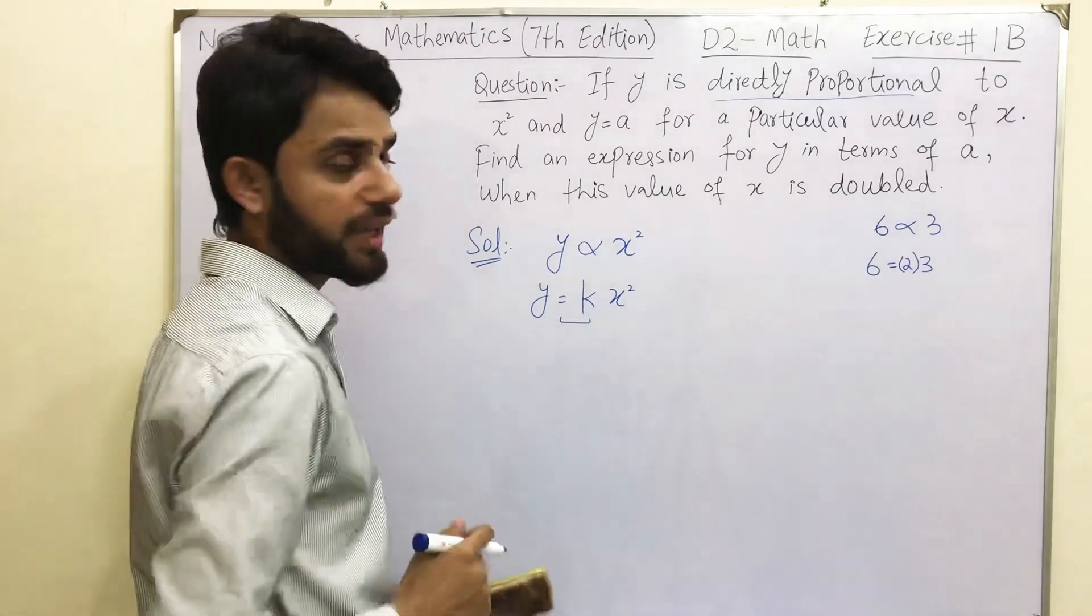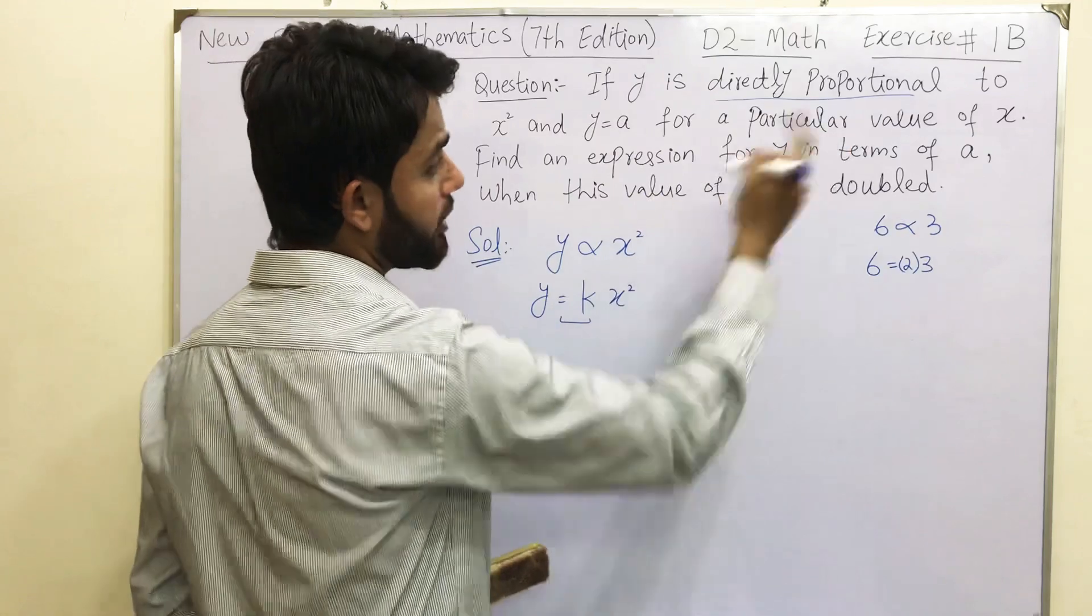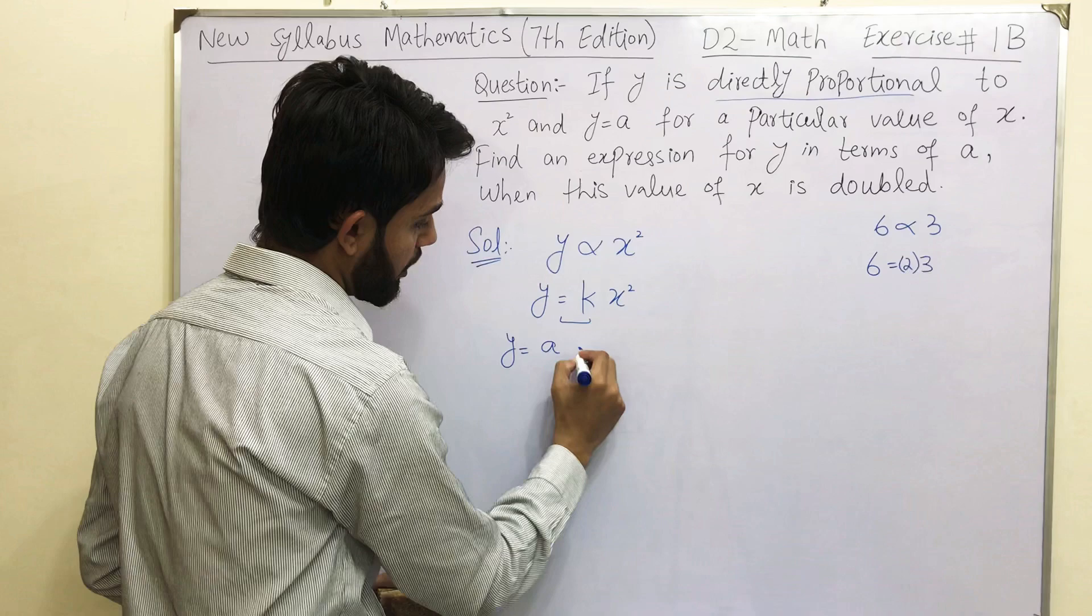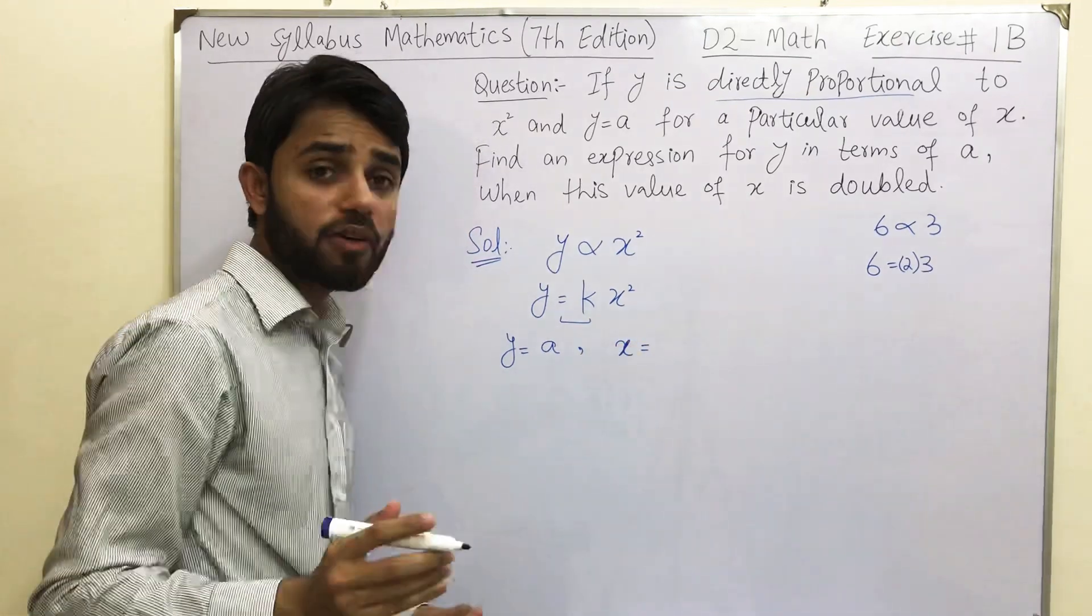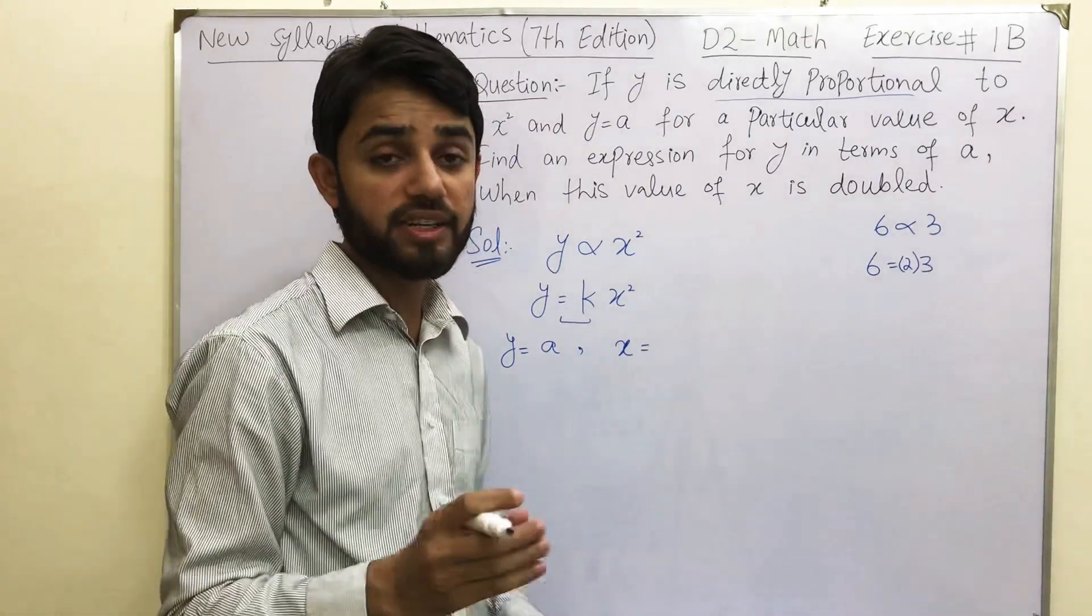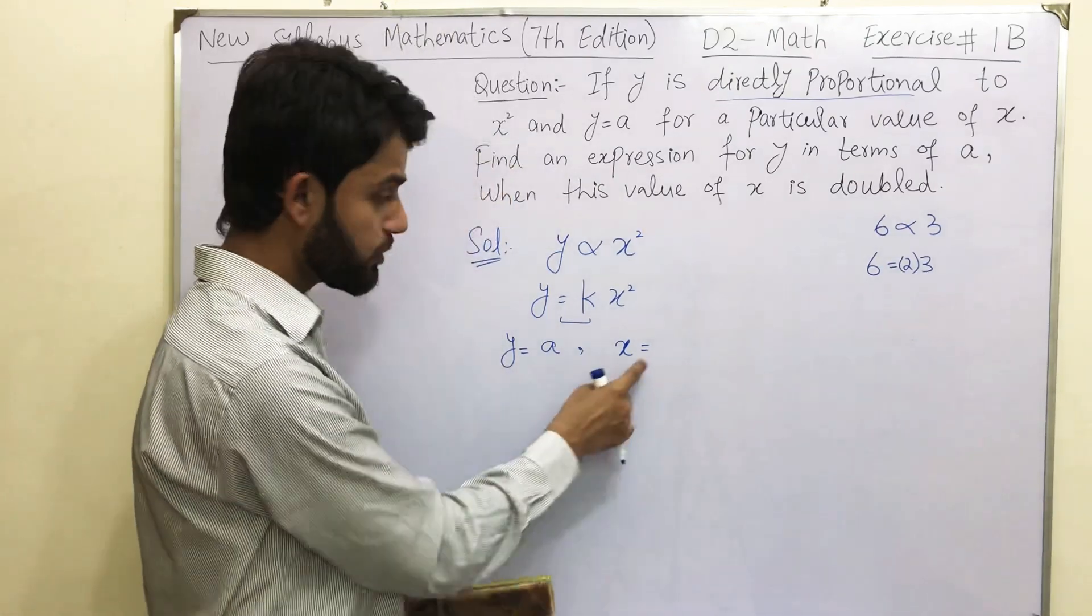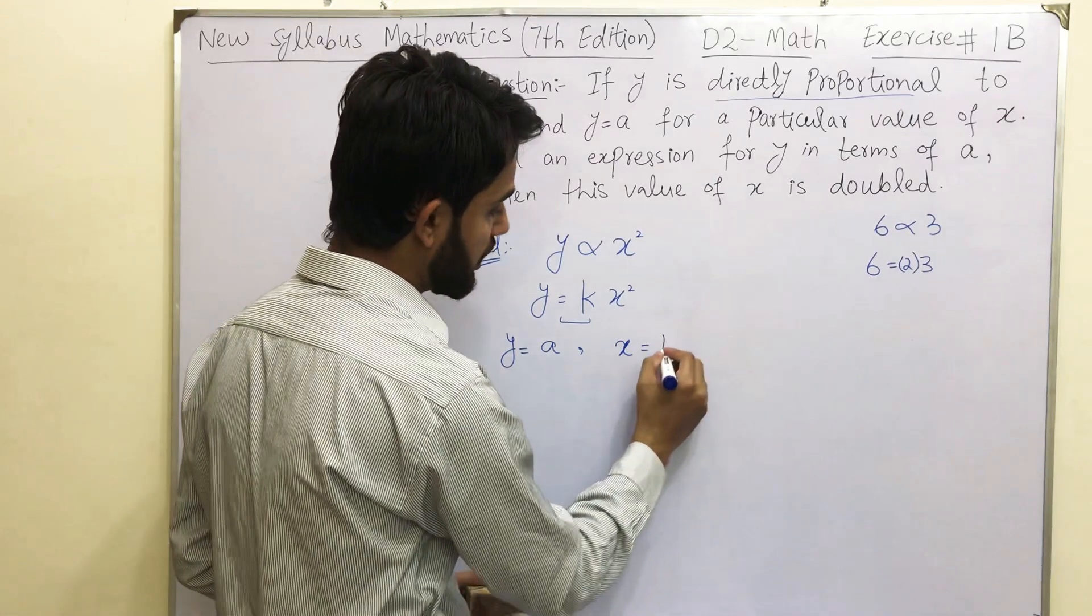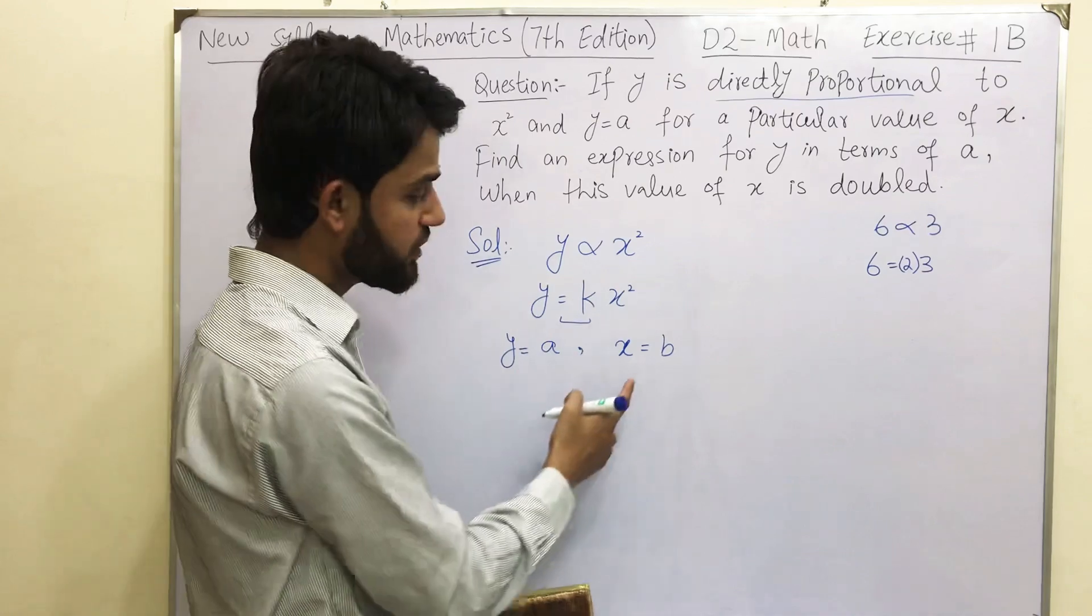So y is equal to k x square. And y equals to a for a particular value of x. Now that particular value of x could be anything. So you can't take a specific number but you can take any variable from a to z. Make sure that you should take a different variable as we have a over here as well. So I am going to take the value of x equals b.